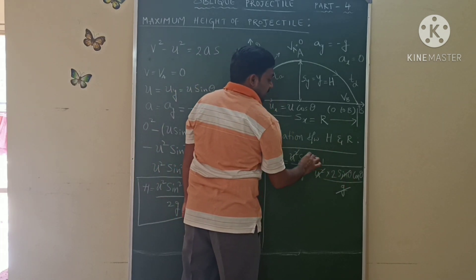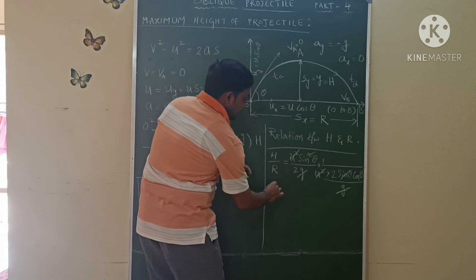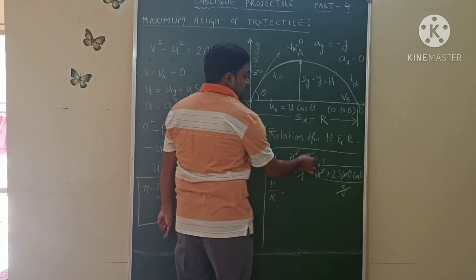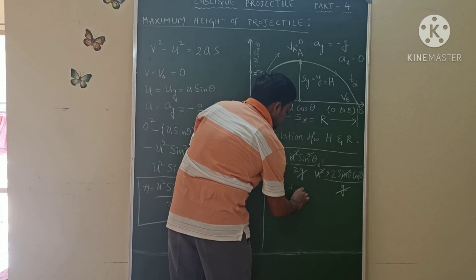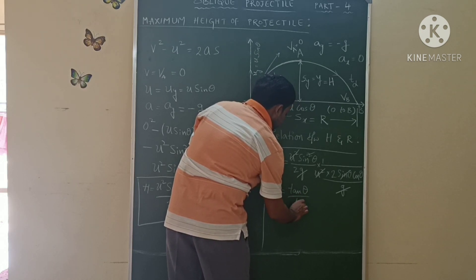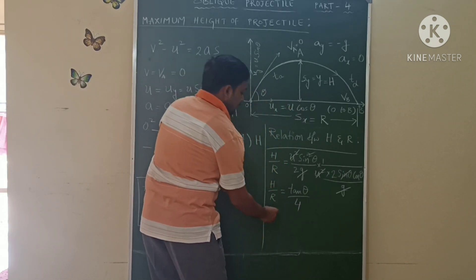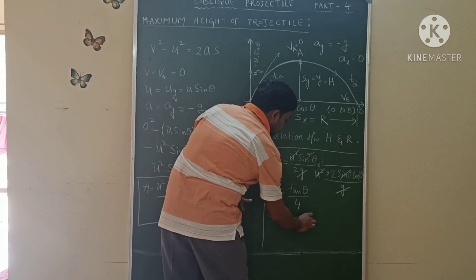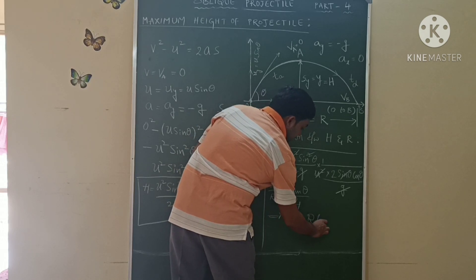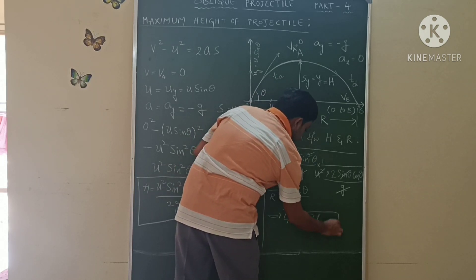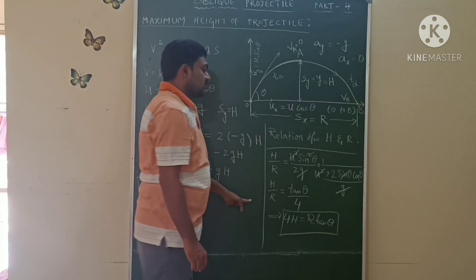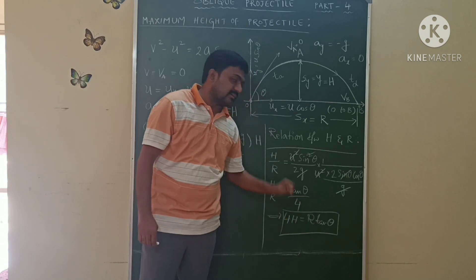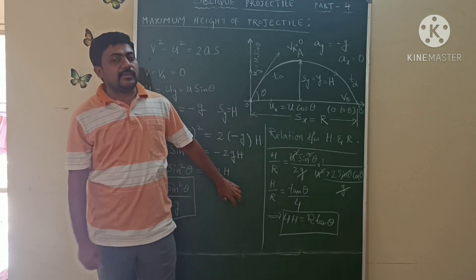One sinθ cancels, and the remaining expression gives H/R = tanθ / 4. Therefore, 4H = R tanθ, or equivalently R tanθ = 4H. This is the relation between maximum height and range. These equations are all very useful.